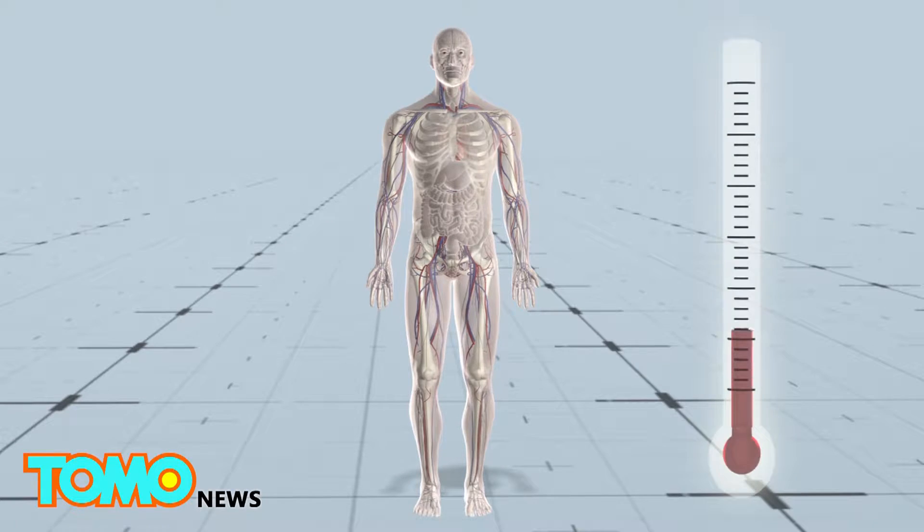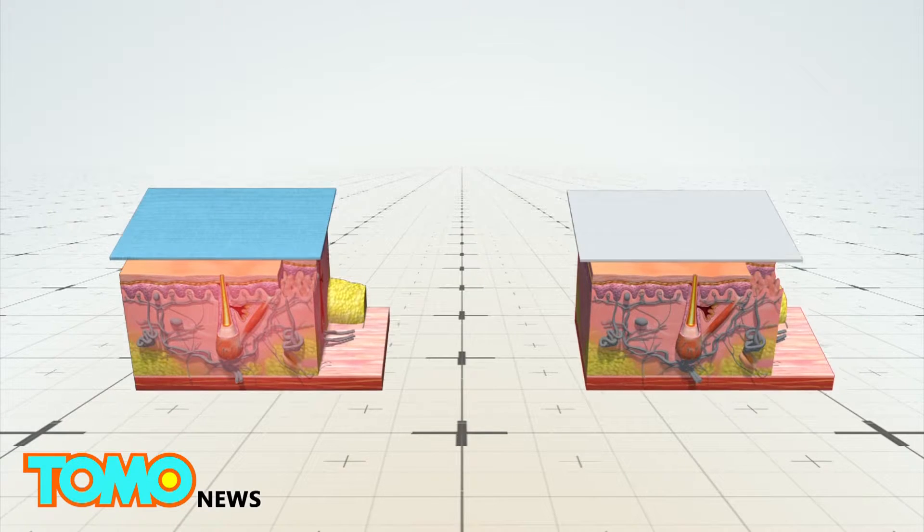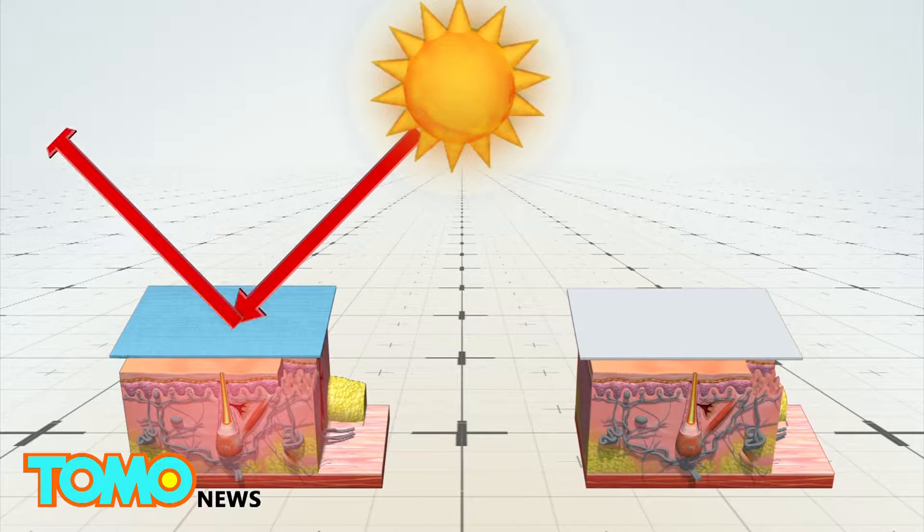Much of the heat that radiates off human skin is in the infrared zone of the electromagnetic spectrum. Cotton clothing is good at reflecting visible light, but only 1.5% of infrared waves can penetrate the material. This means body heat is mostly absorbed by the fabric or reflected back onto the skin.